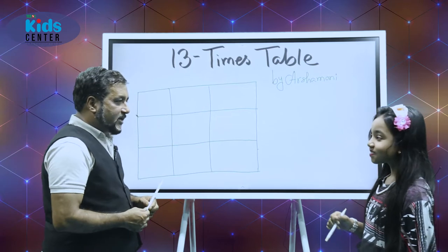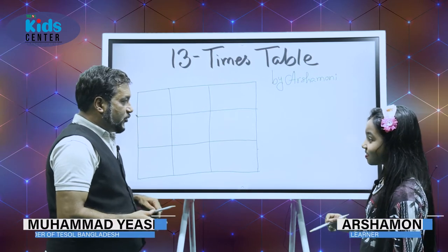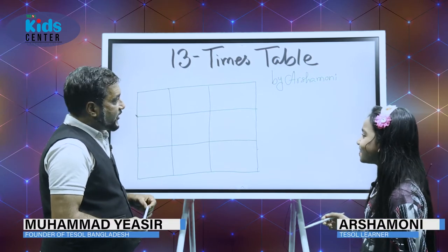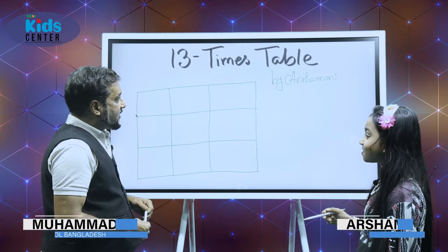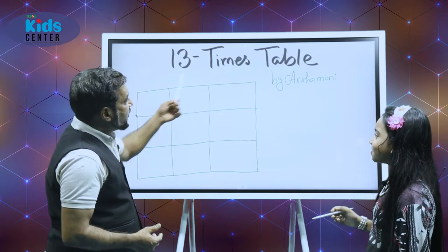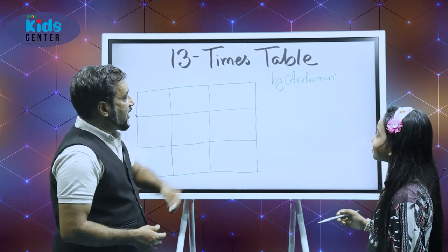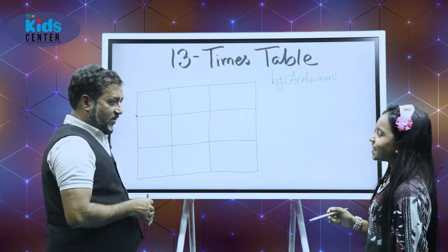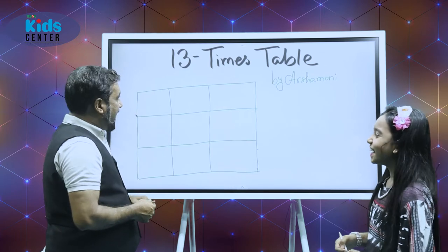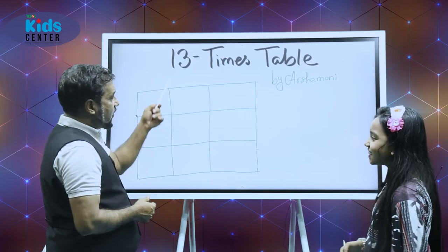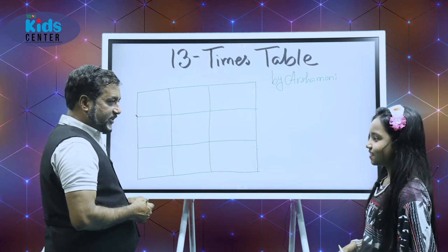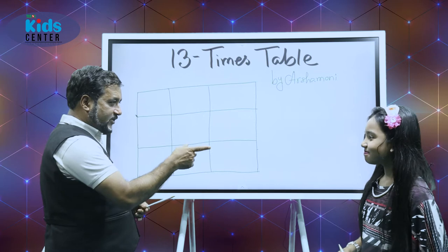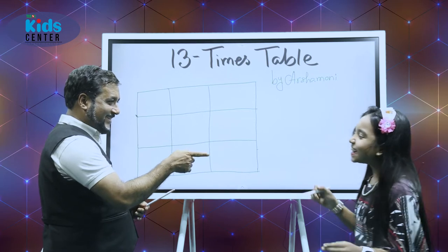Ashamani, I called you an iconic kid, but you need to prove that. It's the 13 times table by Ashamani. You are a little kid of class 3, right? And you are going to show us a trick of 13. You are not yet 13, right?